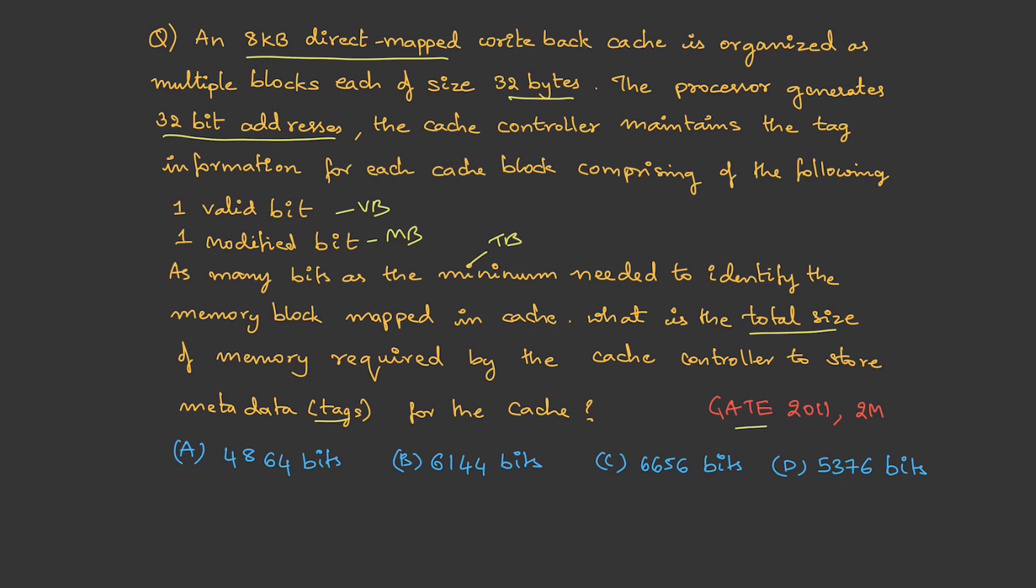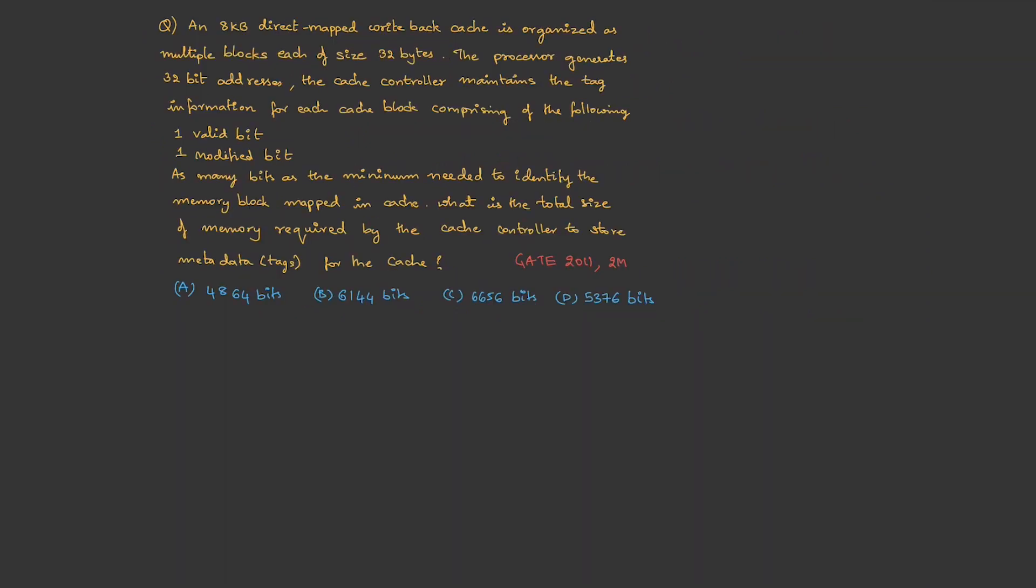This is a question asked in GATE 2011 for two marks. To solve this, let's write the given data. It is 8KB cache, so cache size is 8KB, which equals 2^3 × 2^10 = 2^13 bytes, so we need 13 bits for cache address. Then block size is given as 32 bytes, so block size is 32 bytes, which is 2^5 bytes. So we need 5 bits for block offset. Then they have given the physical address is 32 bits.